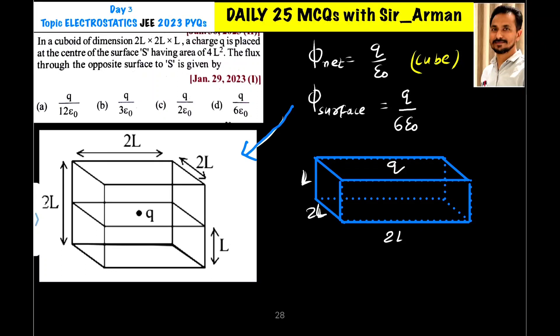A cuboid of dimension 2L, 2L and L. A charge Q is placed at the center of surface S having area of 4L square. Here I have this cuboid, and at the center of the surface - which surface? The surface having area 4L square.